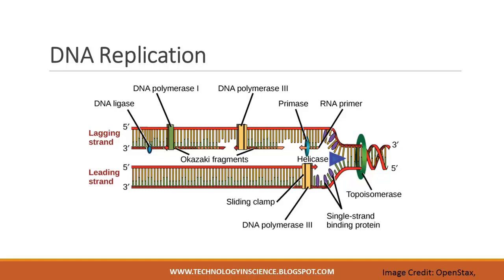As DNA synthesis proceeds, the RNA primers are replaced by DNA polymerase-1, which breaks down the RNA and fills the gap with DNA nucleotides. The nicks that remain between newly synthesized DNA and previously synthesized DNA are sealed by the enzyme DNA ligase, which catalyzes the formation of phosphodiester linkages between the 3' OH end of one nucleotide and the 5' phosphate end of the other fragment. Once the chromosome has been completely replicated, the two DNA copies move into two different cells during cell division.